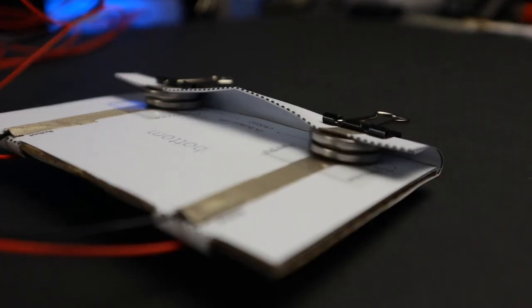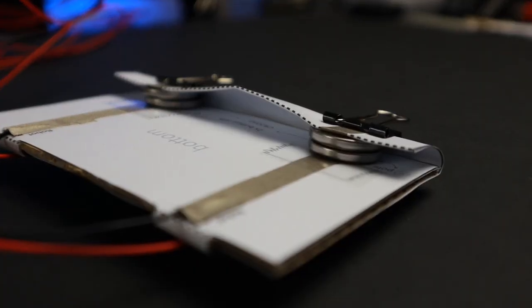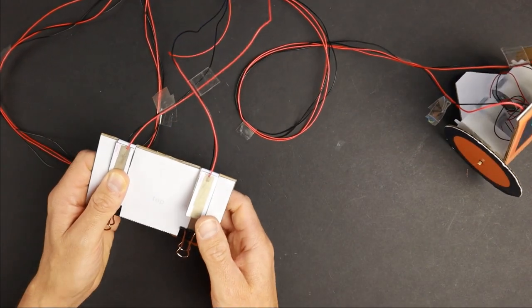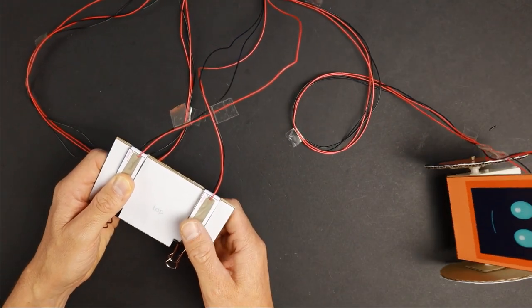Attach two batteries to each side of the remote. Now we have two separate circuits that control one motor each. Awesome!